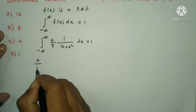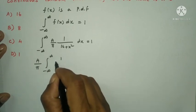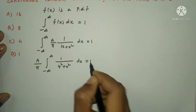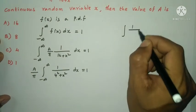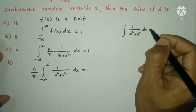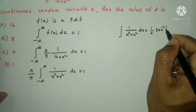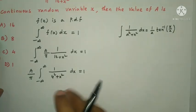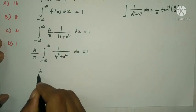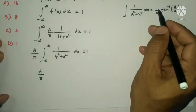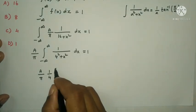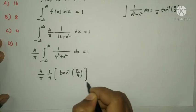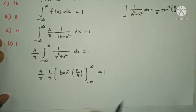A/π is a constant. The denominator is 4² + x², so using the formula: integral of 1/(a² + x²) dx = (1/a)·tan⁻¹(x/a). With a = 4, this gives (A/π)·(1/4)·tan⁻¹(x/4) evaluated from minus infinity to plus infinity equals 1.